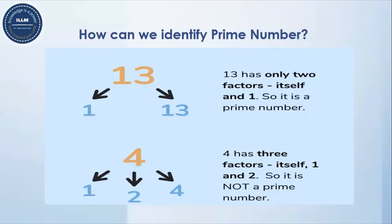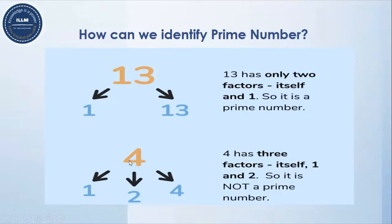If a number is having only one factor or more than two factors, then it is not a prime number. For example, four is having more than two factors: it is divisible by one, divisible by itself (four), and also divisible by two. So four is not a prime number because it has more than two factors.